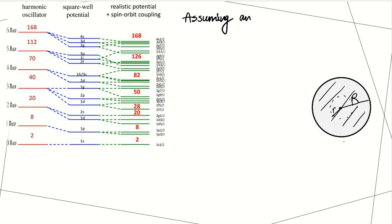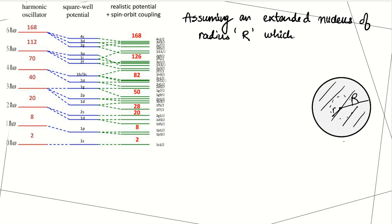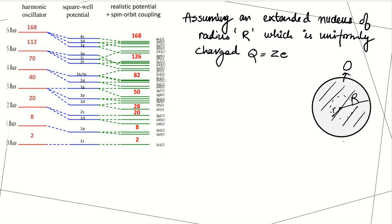Let's start by assuming an extended nucleus of radius capital R which is uniformly charged. The total charge on this nucleus is Ze, let the mass be M and density be ρ. We need to find the potential at a radius small r.